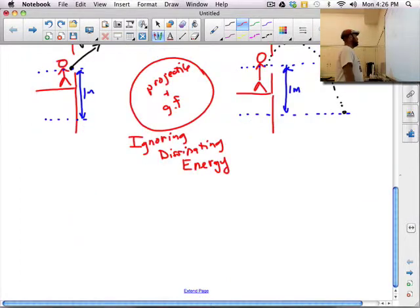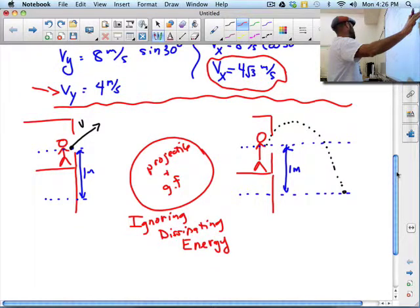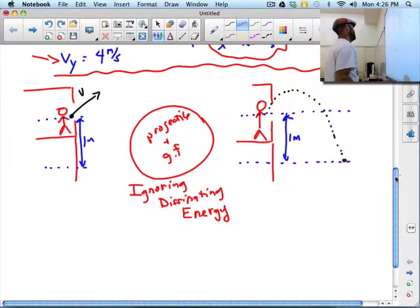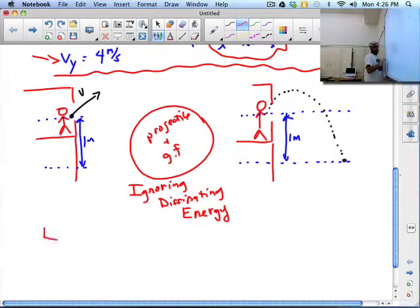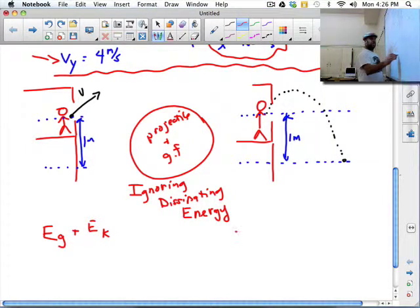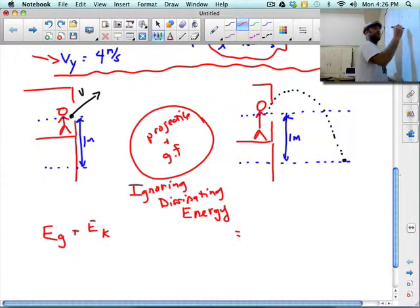So the tricky thing about this is in the beginning, our objects are moving with an initial velocity. So we don't have to worry about elastic in the beginning or in the end, because we don't have elastic molecules here. But we got EG in the beginning. We have EK in the beginning. And then between these moments in time, we're ignoring dissipated energy, so we don't have to worry about it.